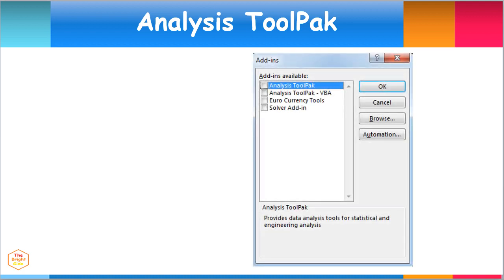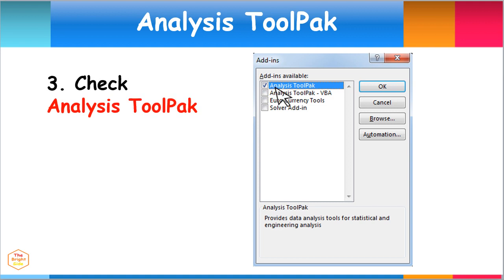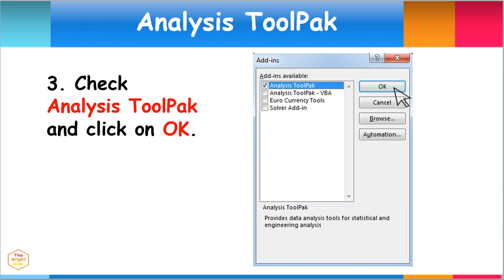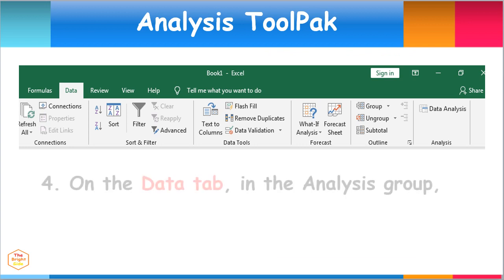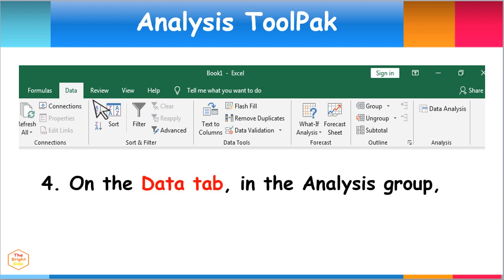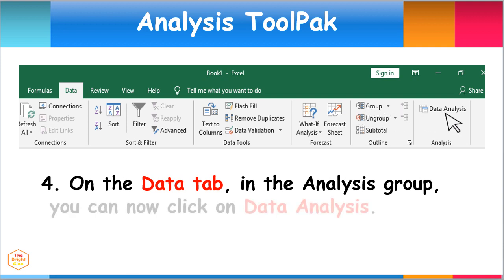When this dialog box appears, make sure to check the Analysis Tool Pack tick box and click OK. Now that the Tool Pack has been added, click on the Data tab menu. Then in the Analysis group found in the far right side of the menu, you can now click on Data Analysis.